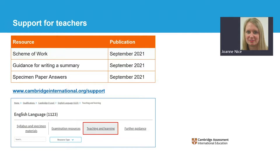After the specimen papers are published in September 2021, a set of specimen paper answers are produced. They provide example answers for the specimen paper questions, along with examiner commentaries on the answers and marks. Teachers can use the answers, commentaries and marks to gain a better understanding of the standard required in examinations so that learners can be better prepared when they sit their first exams.